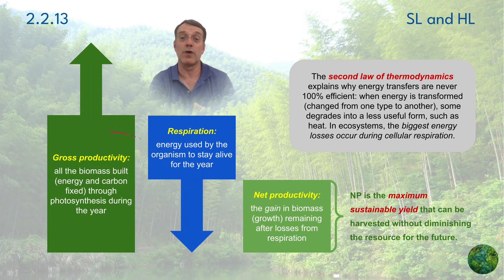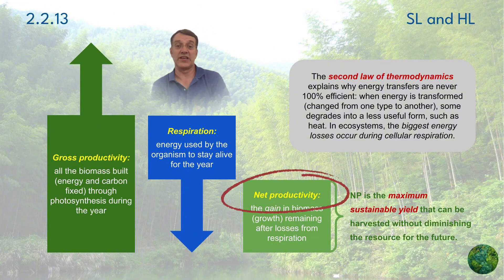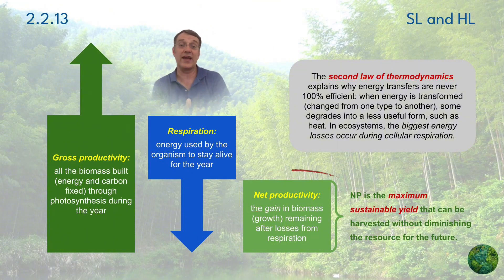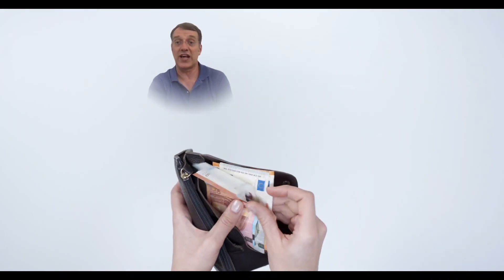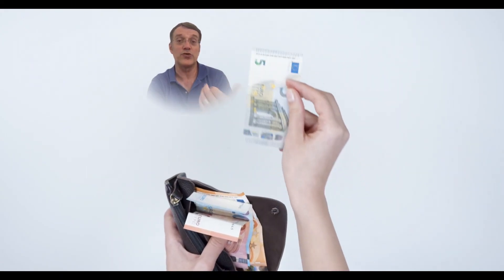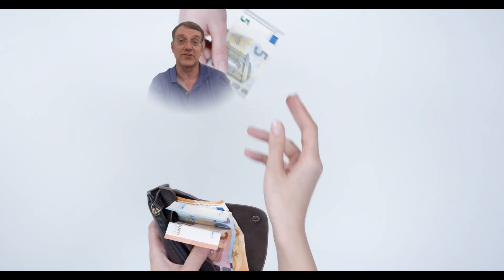Gross productivity represents the total gain in biomass by an organism or a trophic level. Net productivity is what remains after we take away the losses due to cellular respiration. It's like having a gross salary — everything that you earn — and the net salary is what you take home after deductions for things like taxes and insurance.